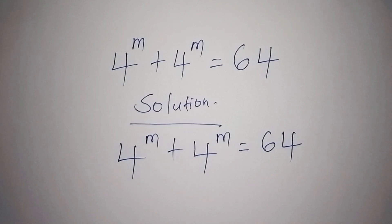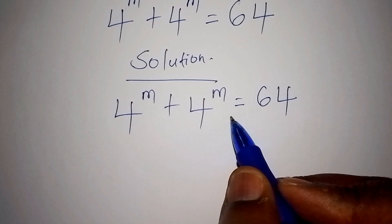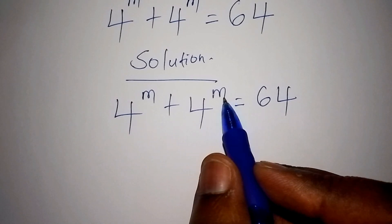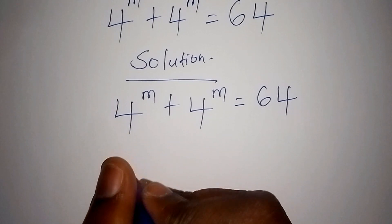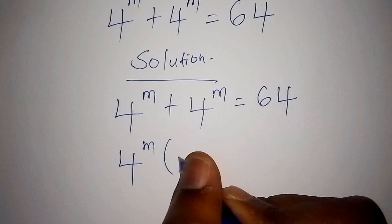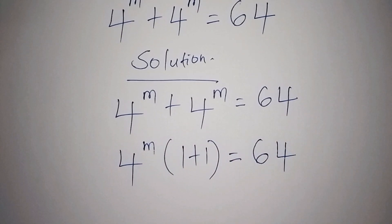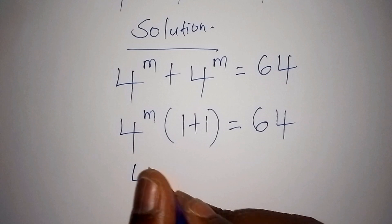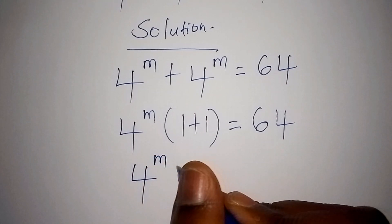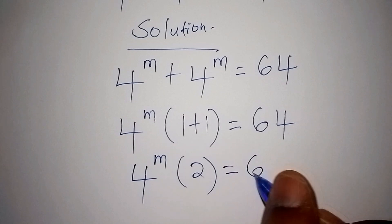So how do we go about this? Because we have two numbers that are literally the same — 4 to the power of m plus 4 to the power of m — it is proper for us to factorize them. We can factorize by having 4 to the power of m into bracket 1 plus 1, close the bracket, equals 64. So we work out the bracket: 4 to the power of m into 2 equals 64.